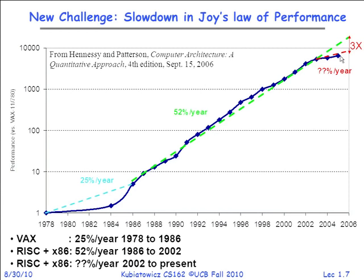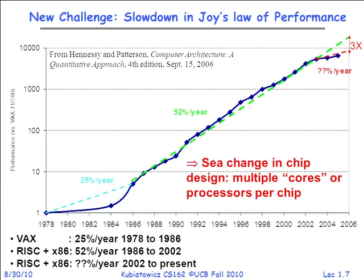Performance improvement also depended on extracting parallelism automatically from software without telling the programmer about it. The lazy programmer used to say, 'my program's too slow now — if I wait 18 months, it'll be fine because the computer's twice as fast.' That doesn't work anymore. So now we put multiple processors on a chip. You can't buy a laptop or desktop these days without talking about how many cores — two cores, four cores, six, even 12 cores. They've given up trying to make individual processors faster; it's all about more processors.